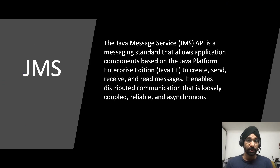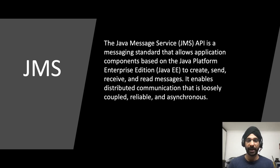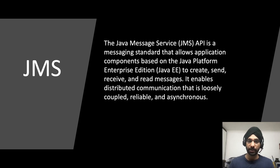The Java Messaging Service, or JMS API, is a messaging standard that allows application components based on the Java Platform Enterprise Edition — Java EE — to create, send, receive, and read messages. It enables distributed communication that is loosely coupled, reliable, and asynchronous.